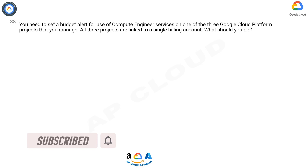You need to set a budget alert for use of Compute Engine services on one of the three Google Cloud Platform projects that you manage. All three projects are linked to a single billing account. What should you do?